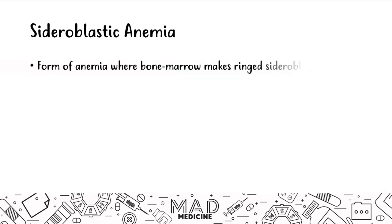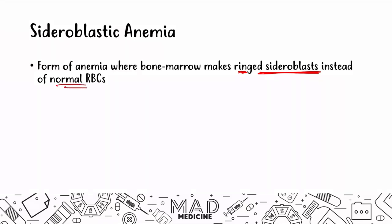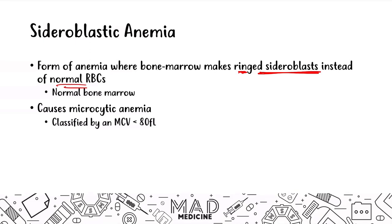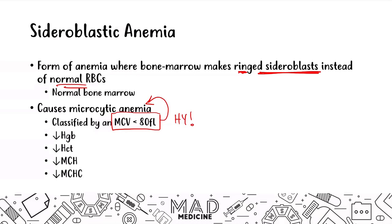Let's talk about sideroblastic anemias. These are a form of anemia where the bone marrow makes ringed sideroblasts, and that is the hallmark finding in sideroblastic anemia, as the name suggests. Ringed sideroblasts are what you're going to find instead of normal red blood cells. Now, there's no problem with the bone marrow — the bone marrow is functioning properly. It's just making ringed sideroblasts, and this is all due to the underlying conditions causing this issue. You're going to be presented with a microcytic anemia leading to an MCV that is less than 80, and you're also going to have a decrease in all your red blood cell measurements and indices.